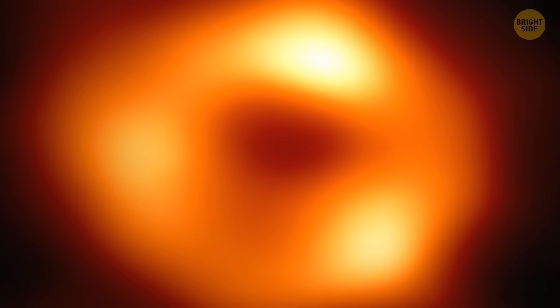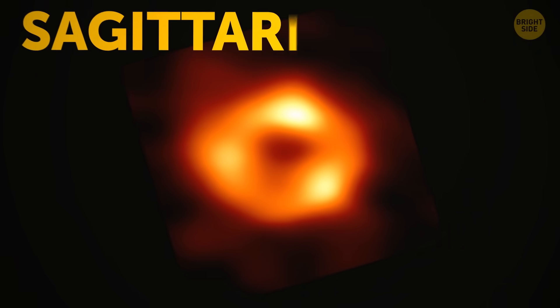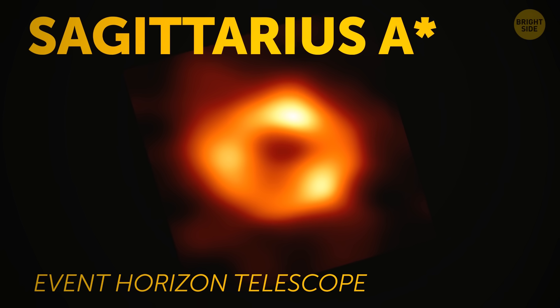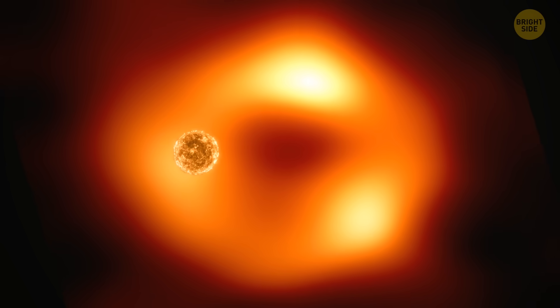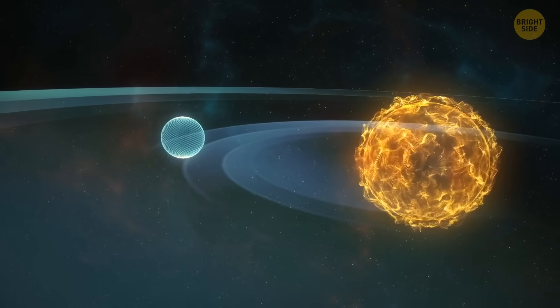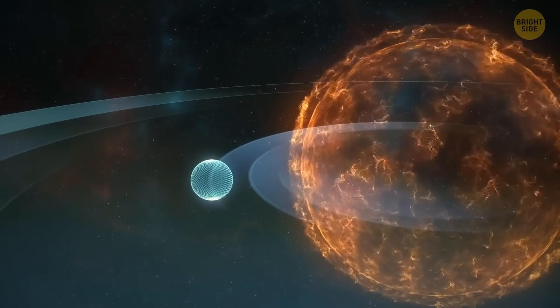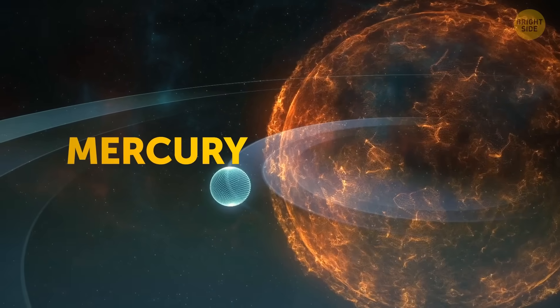For example, in the center of our Milky Way, there's a black hole called Sagittarius A. It has 4 million solar masses, but it's still quite small in size, only 17 times larger than the sun. And yes, it's still considered small. If we had replaced the sun with this black hole, it wouldn't even have reached the orbit of Mercury.